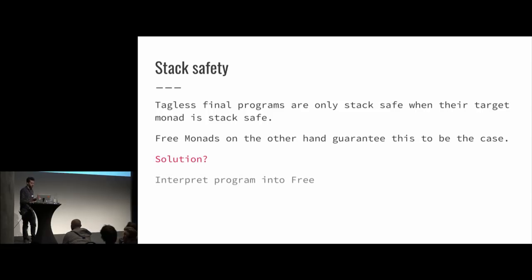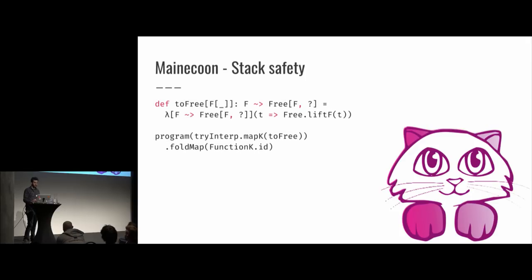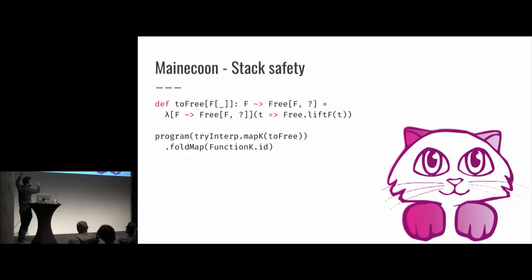So what is the solution? Why can't we just interpret our program into free, and then interpret it into our target monad from there? That's actually really easy with something like MainCoon, because of what we saw just now. We can define this natural transformation from any type F into Free of F, if it has a monad instance, just with this very simple liftF function — which is the same as the inject function Marcus just showed us. Then we can call any interpreter, map it to Free, run the program with this interpreter inside it, and then just fold-map it with the identity natural transformation to get back the real value in the target monad. This is completely stack safe, and it's basically two extra lines — and stack safety is solved in tagless final.